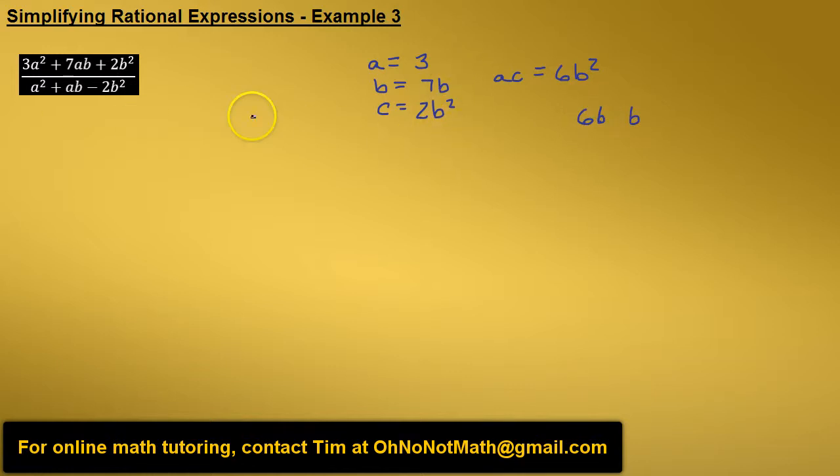So let's rewrite this numerator as 3a squared plus 6ab plus ab plus 2b squared. We've replaced this middle term, 7ab, with 6ab plus ab.